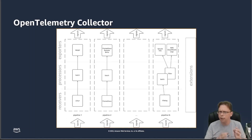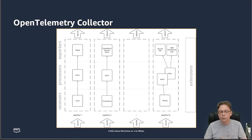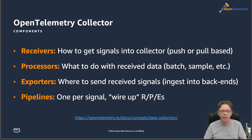You can have many pipelines that cover the same signal type and treat them independently. You could have one log pipeline for one specific environment like development that lands logs in a certain backend, and another one for production, and so on. The OpenTelemetry collector is a very substantial part of the OpenTelemetry project and the overall value proposition. The three main components in a pipeline are: receiver, processor, and exporter — wired up by pipelines to build routing and filtering as you see fit.